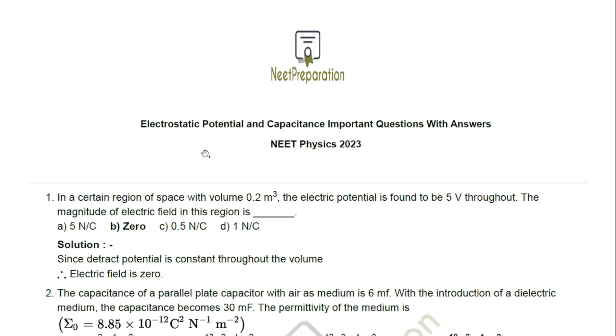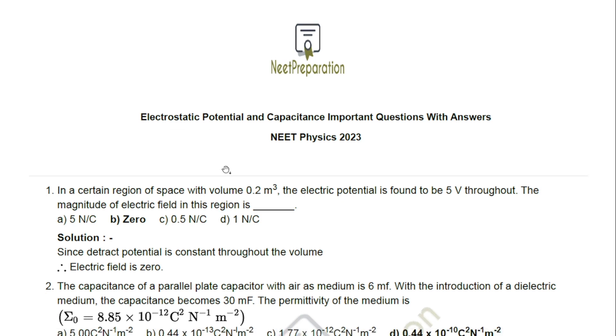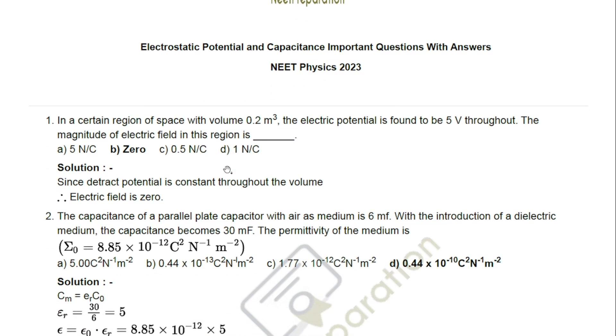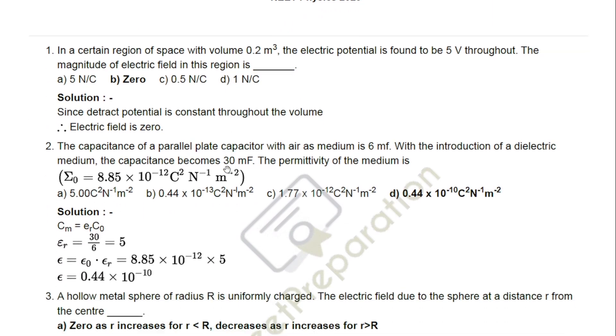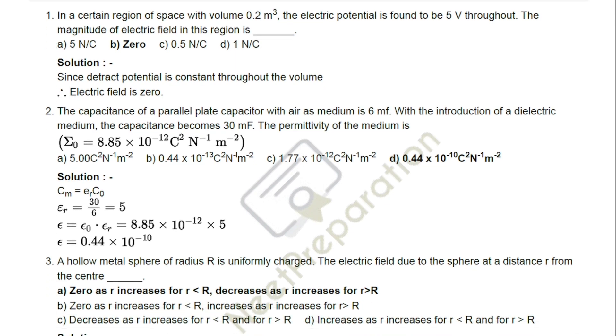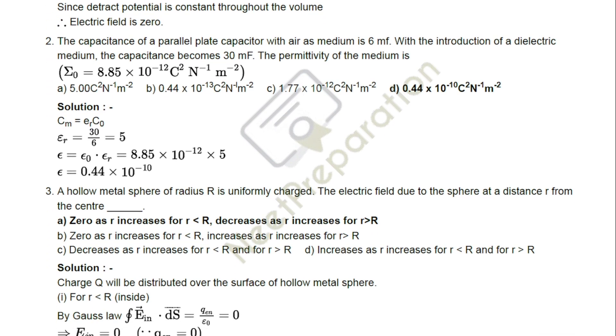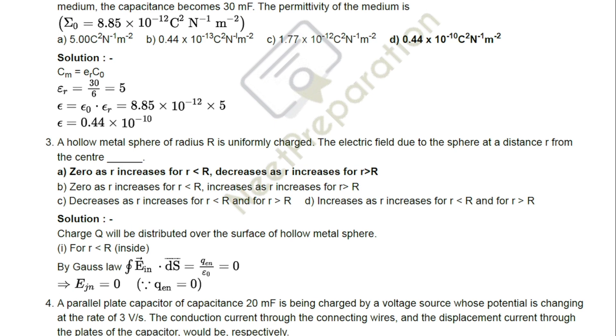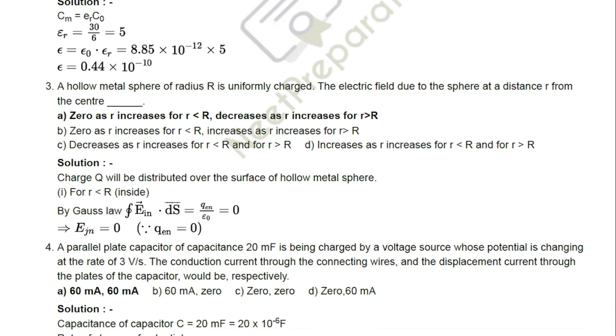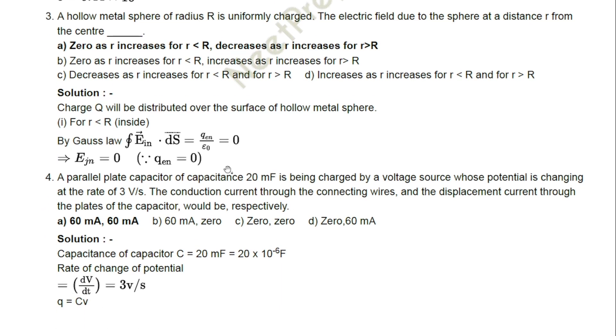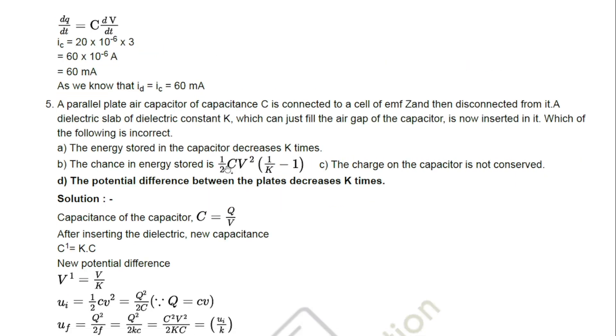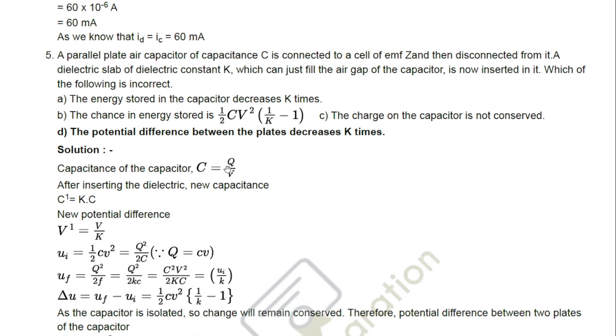In this particular video, we are going to discuss electrostatic potential and capacitance important questions with answers. NEET is a paper and pen-based exam, meaning in the exam hall they will provide an OMR sheet. In that OMR sheet, 200 question numbers and option names are there. You just read the question in your question paper, find the correct answer, and shade the correct answer's option name in the given OMR sheet.